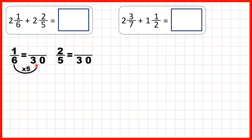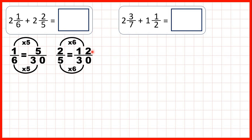6 times 5 is 30, and 1 times 5 is 5. So we can rewrite our question: instead of 2 and 1 sixth, we can write 2 and 5 thirtieths because that's equivalent to 1 sixth.